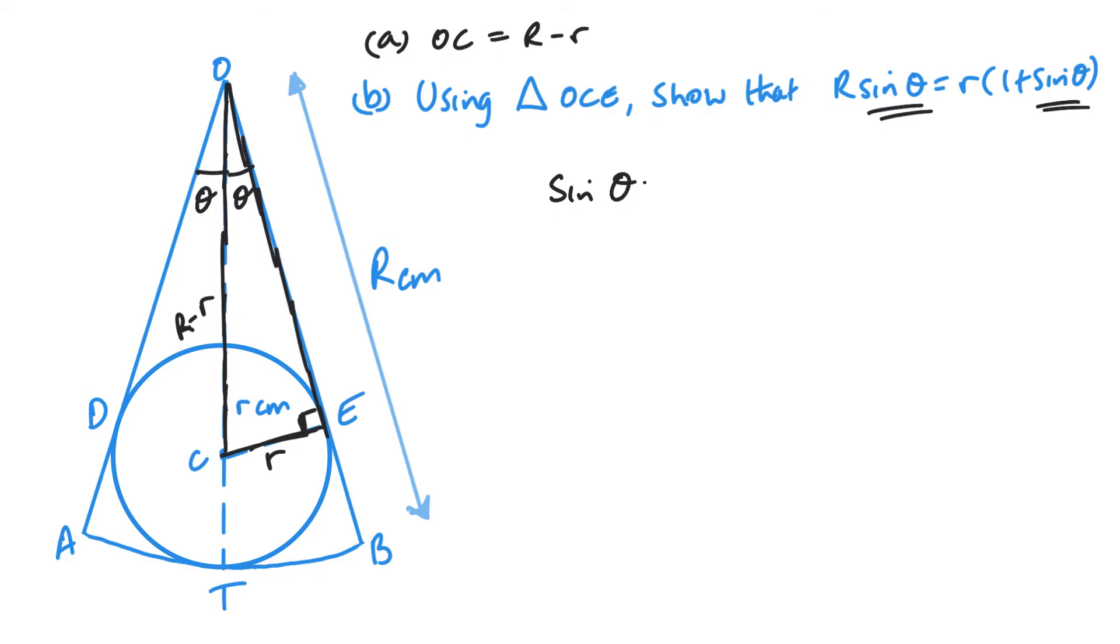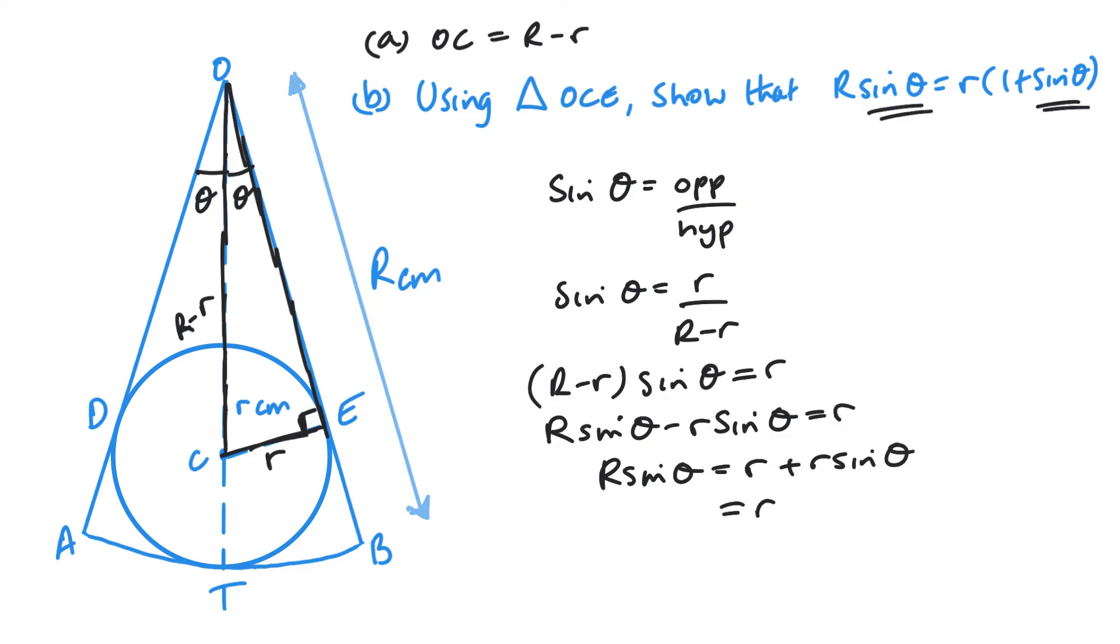So in a triangle, right angle triangle, sine theta is opposite over hypotenuse. So sine theta is going to be r over R minus little r. And then if I multiply by R minus r, we get R minus r sine theta equals r. Expand my brackets, R sine theta minus little r sine theta equals little r. And then factor out the r, we get 1 plus sine theta on the right, R sine theta there on the left. And this is what we were required to show.